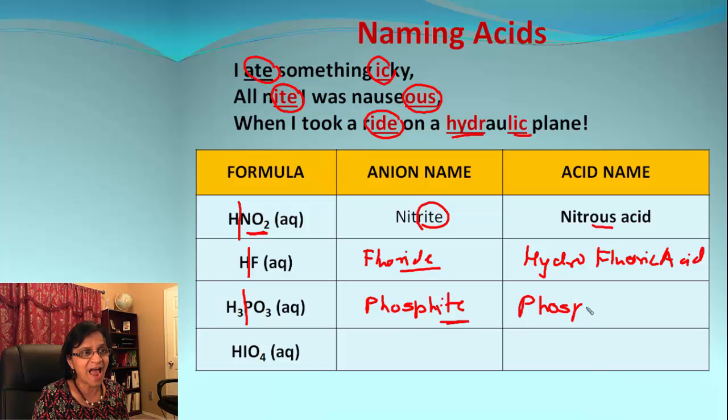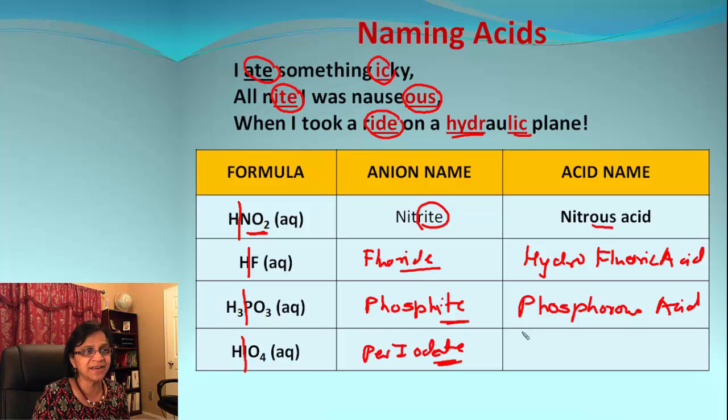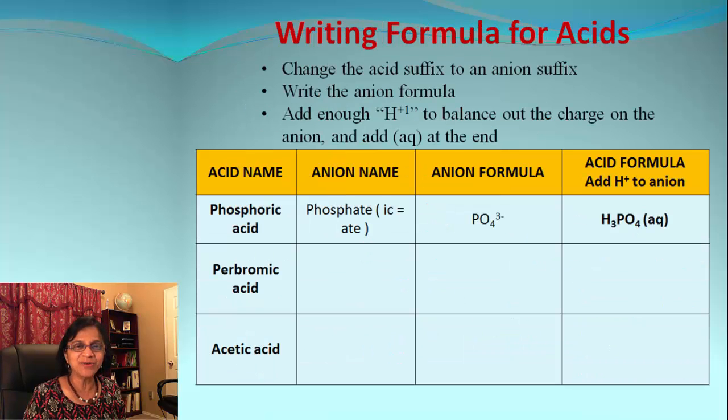Next one is HIO4. IO4 is per-iodate, ending with -ate. I ate something icky, so the acid will be per-iodic acid.